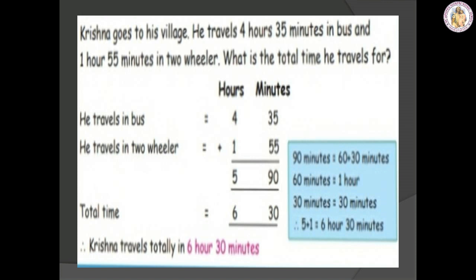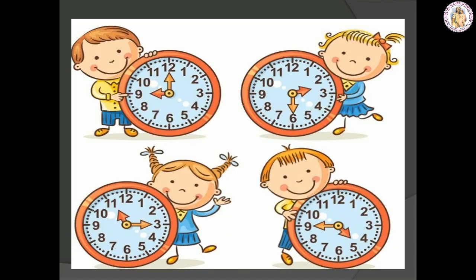Let us try reading the time. The boy's clock shows 9 o'clock. The next one is 2:30 — that is half past. The girl's clock denotes 11:15. The last one denotes 9:25.